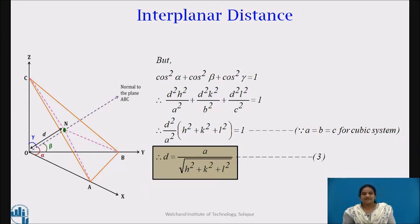We will get the final equation for interplanar distance as D is equal to A upon square root of H squared plus K squared plus L squared.